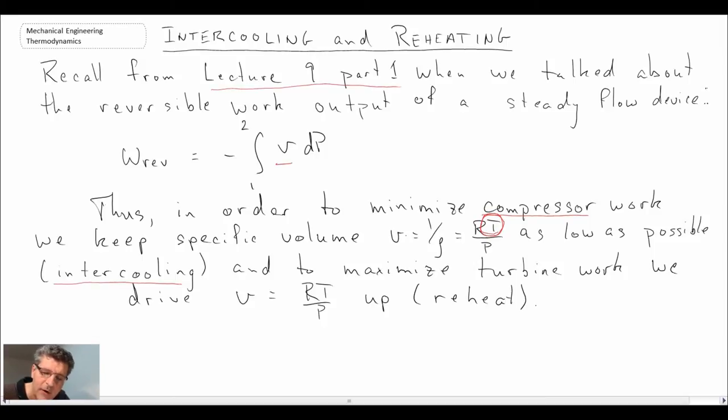The other part is if you want to maximize work out, in that case you want to move your specific volume up. The way that you can do that is you can increase the temperature by going into what we call a reheat cycle. Intercooling can reduce compression work, reheating can maximize turbine work output.